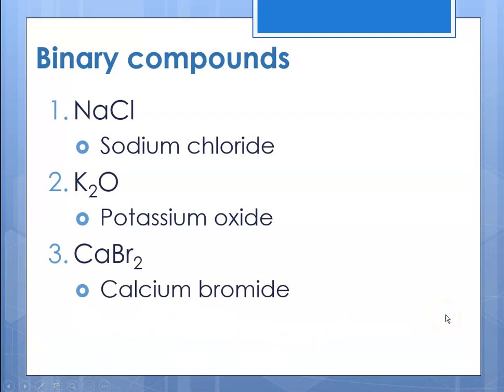My third example is CaBr₂. Ca — name the cation — calcium. Bromine is our anion, so it's bromide. The compound name is calcium bromide.